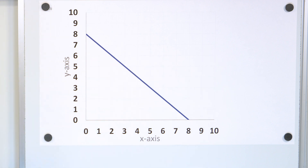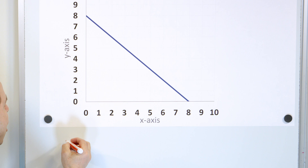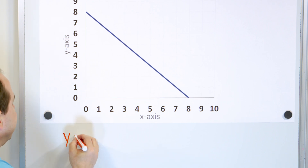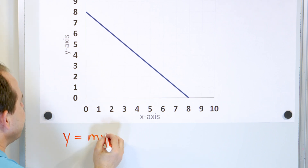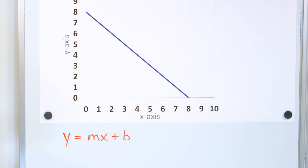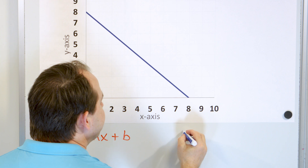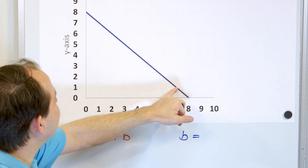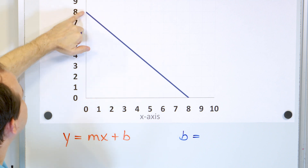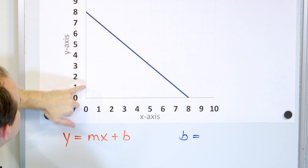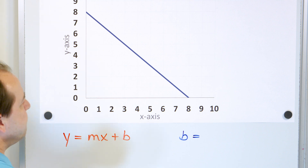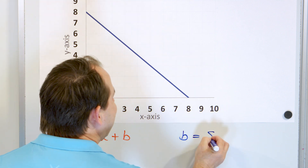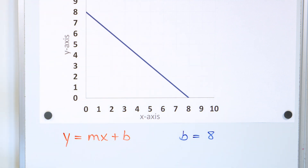A lot of students get stuck when you first learn this, but you get over it pretty quick once you realize that all lines follow the same form: m times x plus b. So all you have to do is write down the important information, m and b. Now b is the y-intercept — it means where does the line cross the y-axis? Here it crosses up at 8, so the y-intercept b is 8. We now know what this number is in the equation of a line.